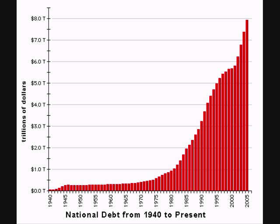The national debt hit the $1 trillion mark in 1981. It took over 200 years for the U.S. to rack up a debt of $1 trillion. By 1986, five years later, it was up to $2 trillion. Three years later, we racked up another trillion, bringing it to $3 trillion. Two years later, another trillion, bringing it up to $4 trillion.